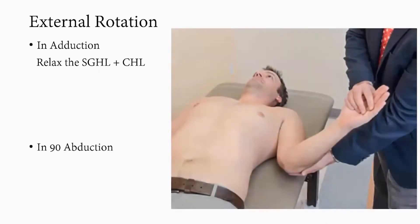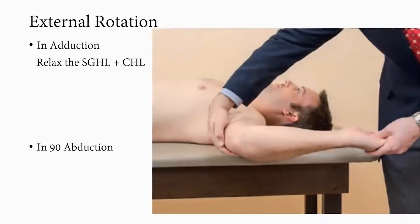External rotation can be measured in adduction: the examiner cradles the elbow with slight abduction away from the torso to relax the superior glenohumeral ligament and the coracohumeral ligament, with the arm slightly above the bed to eliminate shoulder extension. The degree of external rotation is then measured. It can also be measured in 90 degrees of abduction as shown.